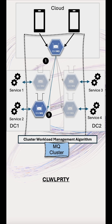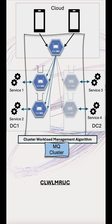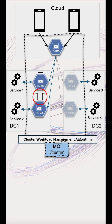We can use a queue manager maximum cluster channels attribute to restrict how many are considered in the next part of the algorithm. For example, by setting the attribute to two, we only consider two channels. If there's still more than one queue, the least recently used is selected, creating a round-robin style of routing.